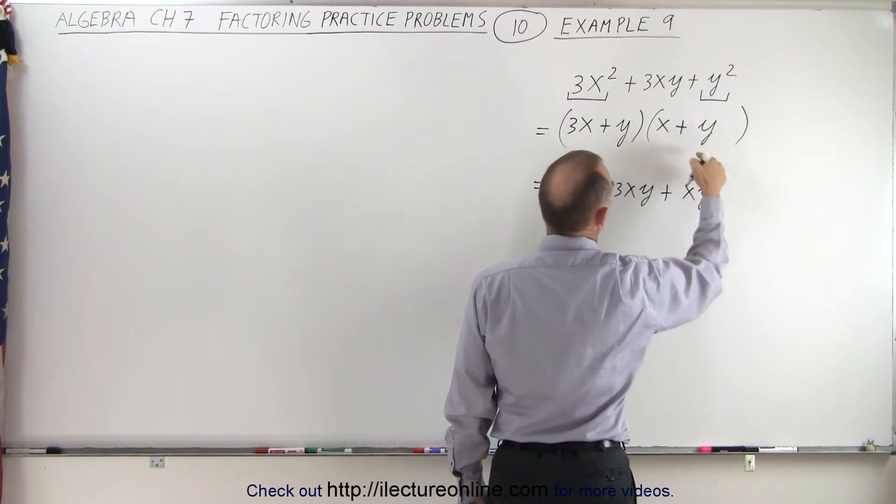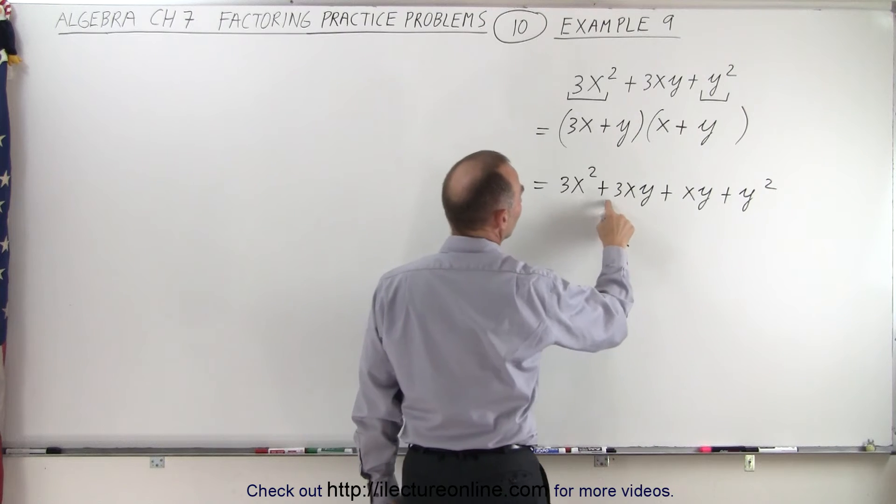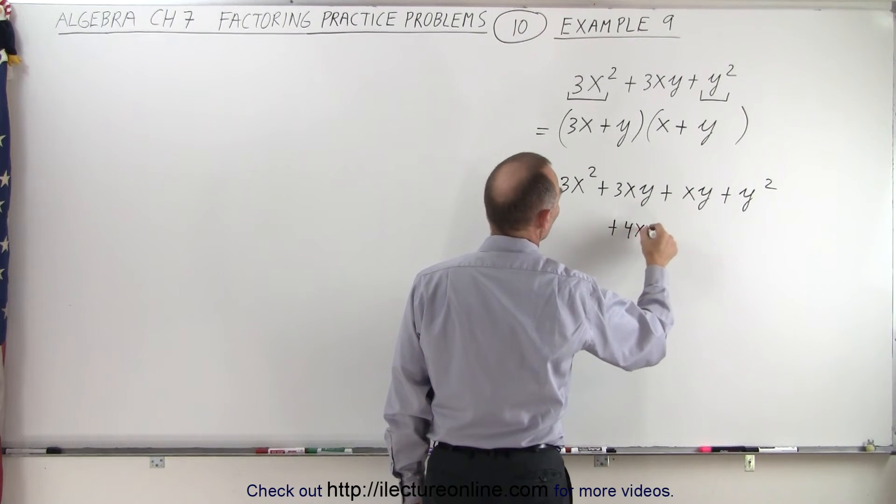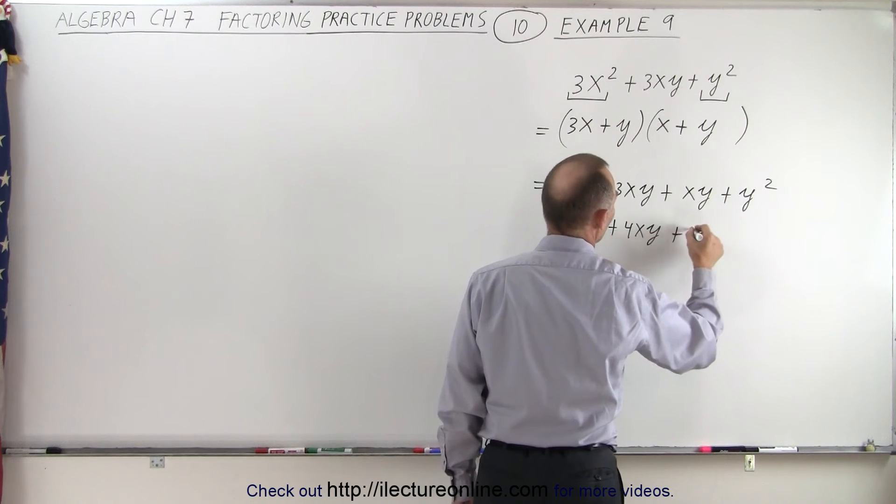And y times y is plus y squared. Notice when I add the two middle terms together, I get a plus 4xy. So 3x squared plus 4xy plus y squared.